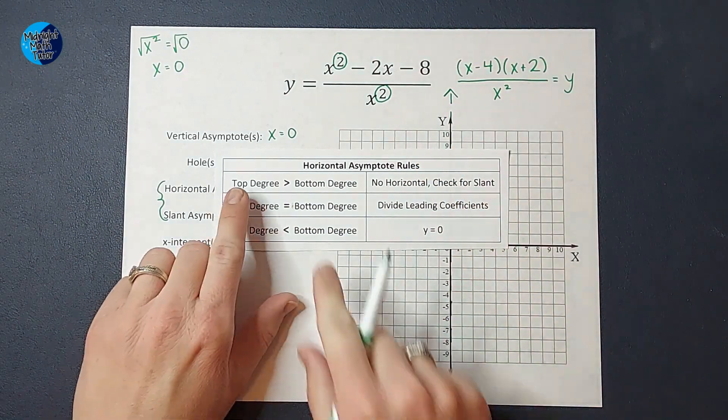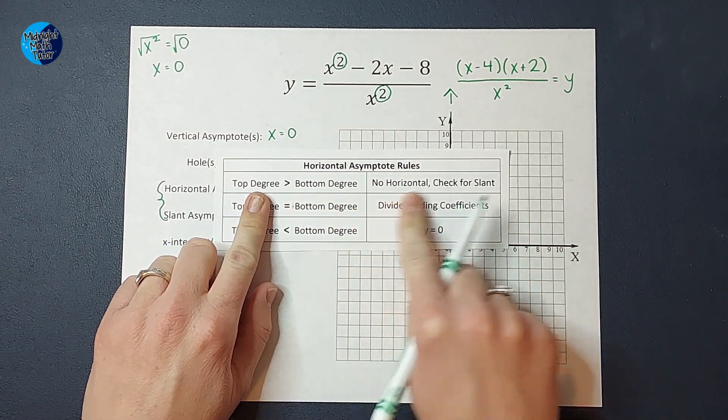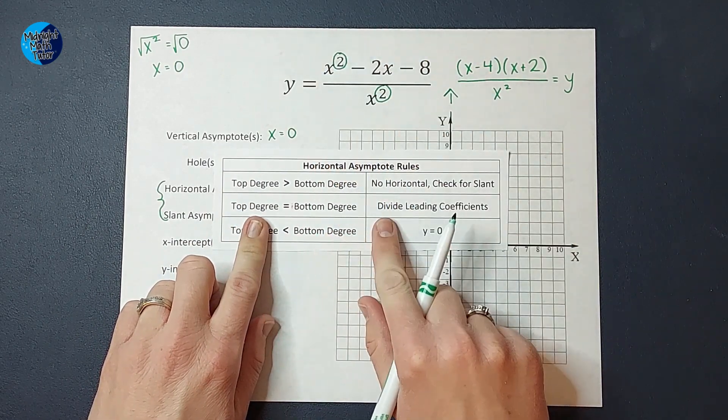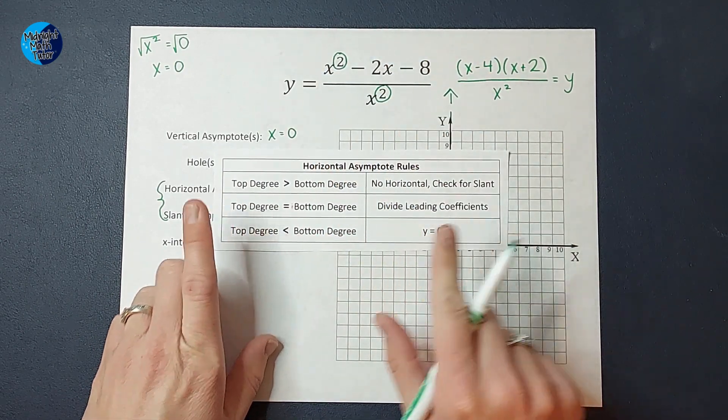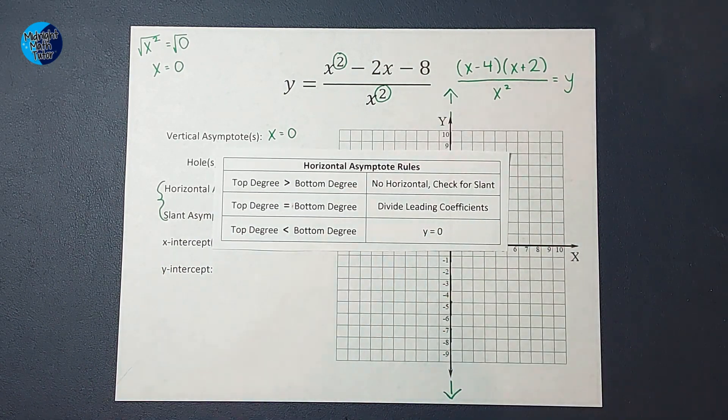So we're looking at their relationship. If the top is bigger than the bottom, we don't have a horizontal asymptote, we check for a slant. If they're equal, like in this example, we're going to divide the leading coefficients. If the top is less than the bottom, then your horizontal asymptote is y equals zero.